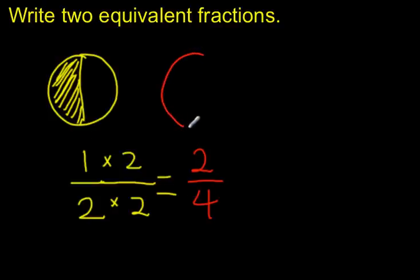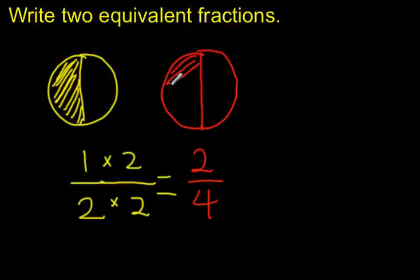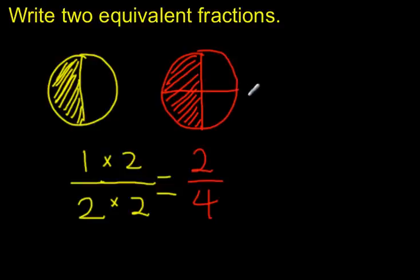So now I have twice as many parts in my whole and twice as many parts that will be shaded. Let's see what that would look like. If I drew a circle and started with my 1 half again, then to show an equivalent fraction — to make it 2 fourths — I'll just cut it this way, cutting each of my parts in half. And now you can see the shaded area in 2 fourths is the same amount as 1 half.